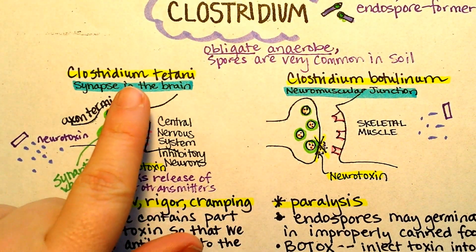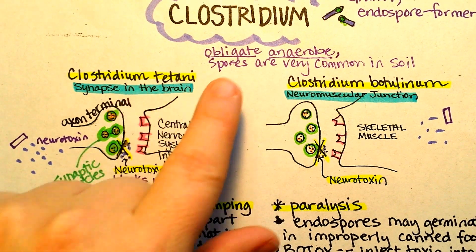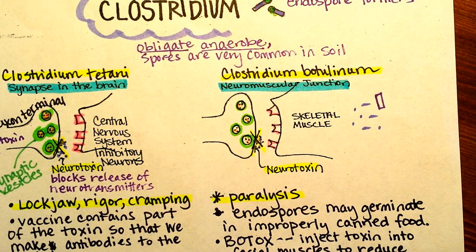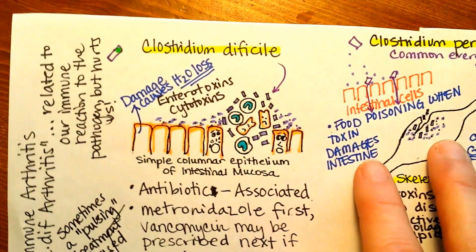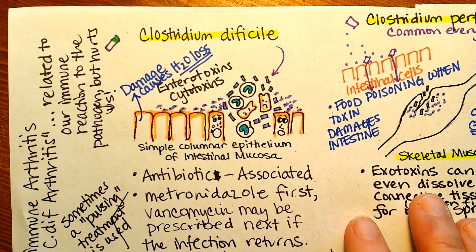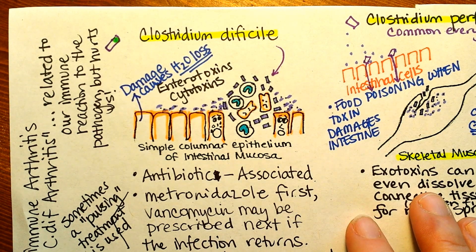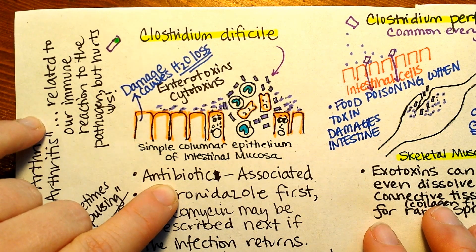Clostridium tetani is most commonly introduced into a deep puncture wound — again, we're looking for that low-oxygen environment. Clostridium botulinum is most commonly going to cause infection if the endospores are present in an improperly canned food. Clostridium difficile is most commonly going to cause diarrheal disease after antibiotics, because the normal flora has been wiped out.